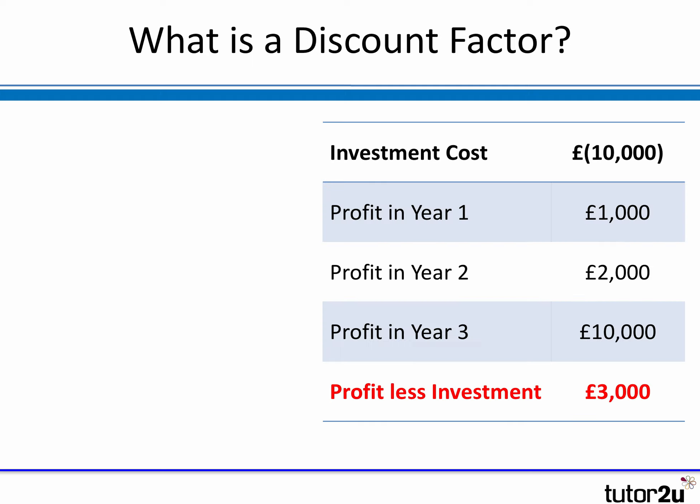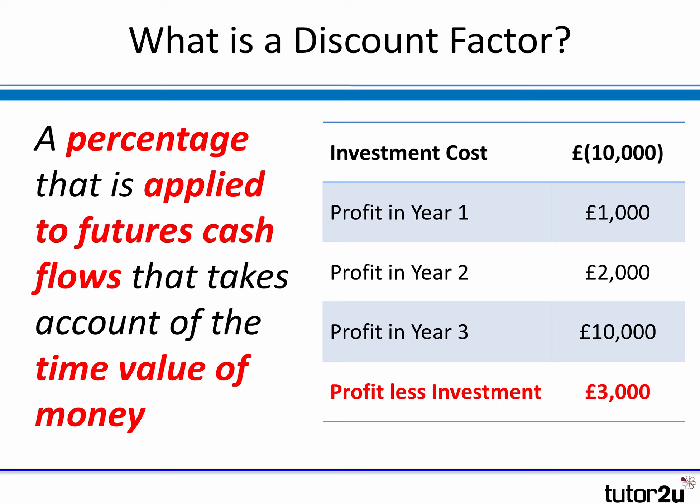To understand the discount factor, consider a project with an upfront investment of £10,000 and profits over the next three years — particularly in year three where £10,000 comes back in, making an overall profit of £3,000 less the investment. The discount factor says that £10,000 profit in year three needs to be discounted or reduced because it's less certain and too far into the future. We simply apply a percentage to future cash flows to reduce their value and take account of the time value of money.